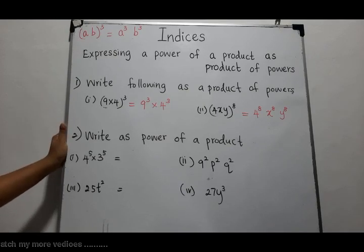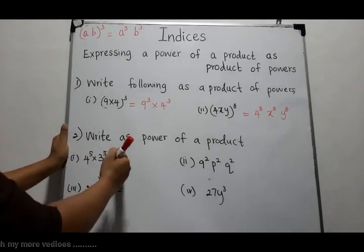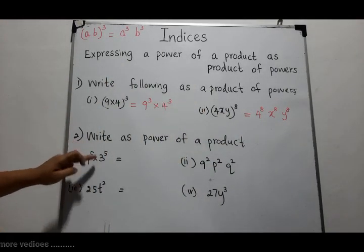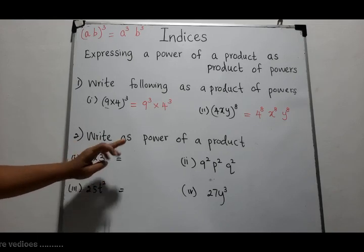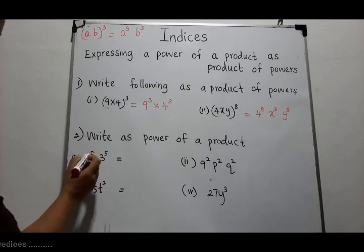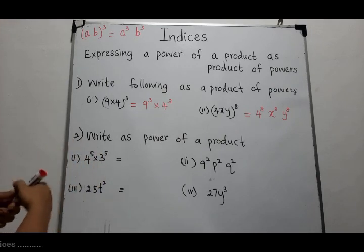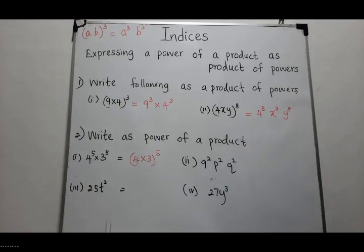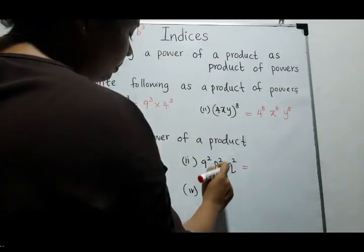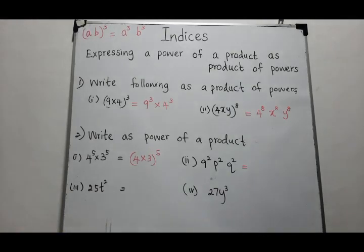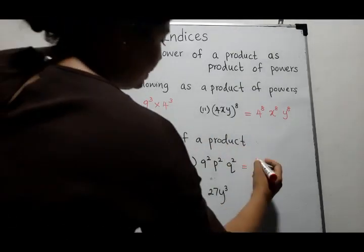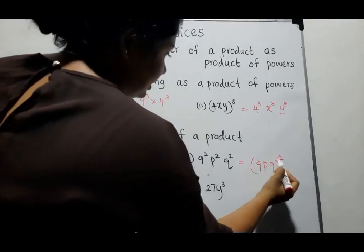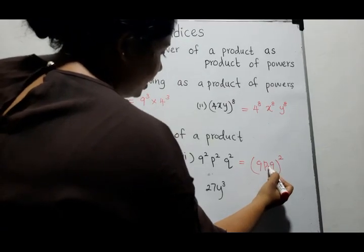Now let us see how to write a given expression as a power of a product. For 4⁵ · 3⁵, the indices of both numbers are 5, so we can write it as (4 × 3) to the power 5, which equals 12⁵. For the next example, 9² · p² · q², all indices are 2, so we can write it as (9pq) to the power 2.